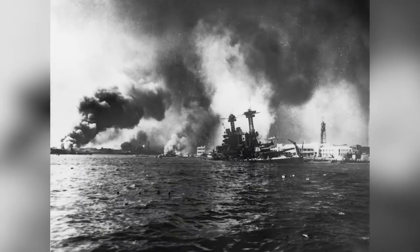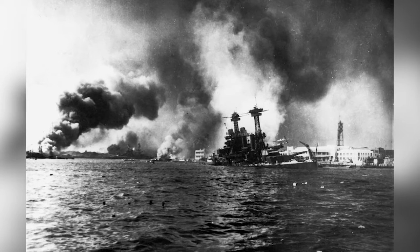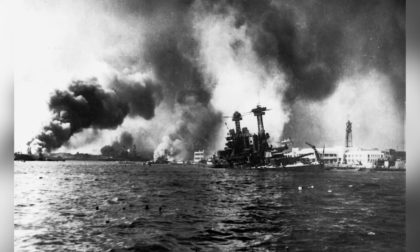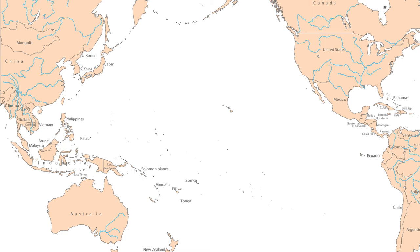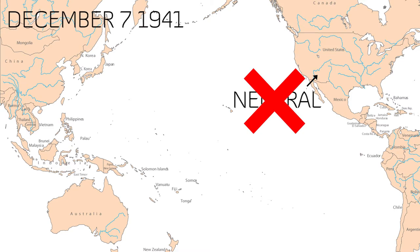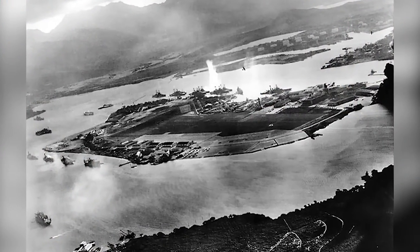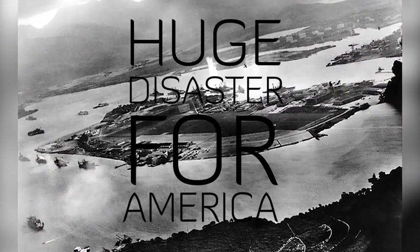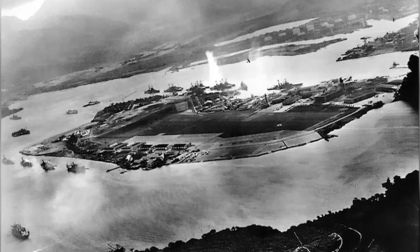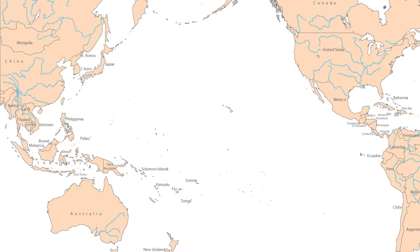We've started with Pearl Harbor. You might have heard of it because it was that disastrous event which brought America into the war. America was neutral in World War 2 until December 7th, 1941 — the attack on Pearl Harbor — which was a huge disaster for America by forcing them to go to war. This is America, and this little island here is Hawaii, also part of America.